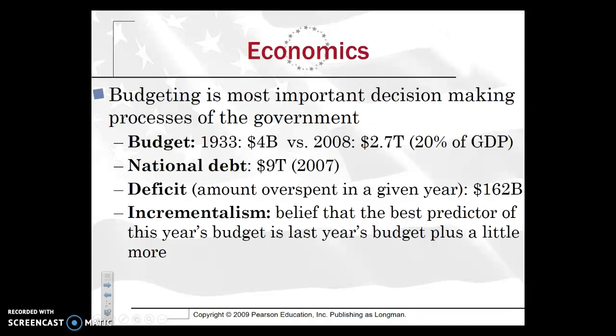Moving on to economics, budgeting is probably the most important decision-making process of the government. If you look at the budgets over time, it is quite amazing: in 1933, a $4 billion budget, compared to 2008 with a $2.7 trillion budget, which at that time made up approximately 20% of the GDP. The national debt as of 2007 was $9 trillion, and you have a deficit — the amount overspent in a given year — at about $162 billion.